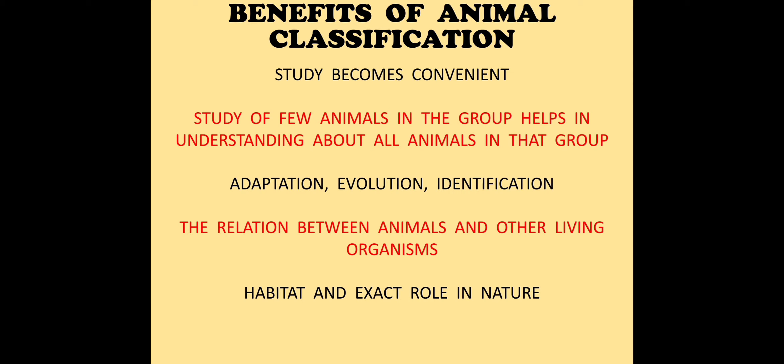Classification also helps us to understand the relationship of animals with other living organisms — what the important role of that animal is in the environment and in the ecosystem. Next, it helps us to understand the habitat of each animal and its exact role in nature, including its relationship with both biotic and abiotic things present in the environment. Lastly, it helps us understand the various adaptations shown by animals.